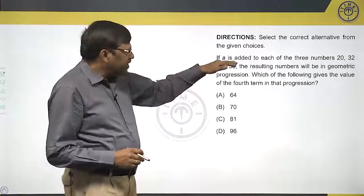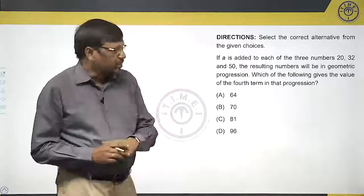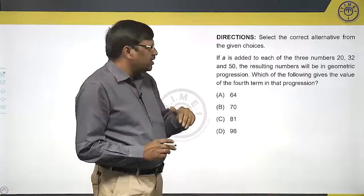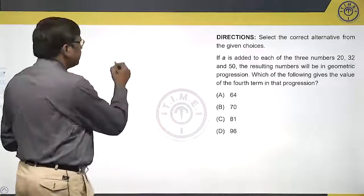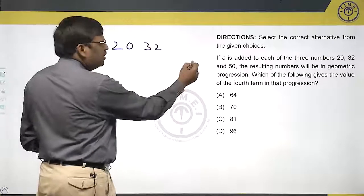Let us look at the next question. If A is added to each of the three numbers, 20, 32 and 50, the resulting numbers will be in geometric progression. Let us see. 20, 32 and 50.